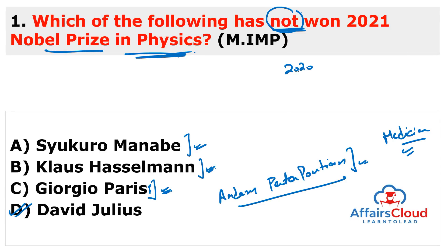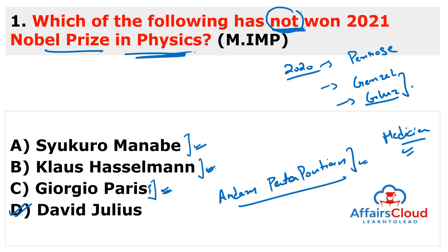Also remember the 2020 Nobel Prize in Physics: Roger Penrose, Reinhard Genzel, and Andrea Ghez were awarded for their pioneering work on black holes and the Milky Way's darkest secrets. David Julius and Adam Patapoutian won the 2021 Nobel Prize in Medicine — not Physics — for their discoveries of receptors for temperature and touch. Nobel Prizes can be asked in any type of exam.